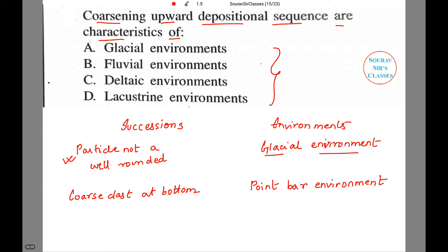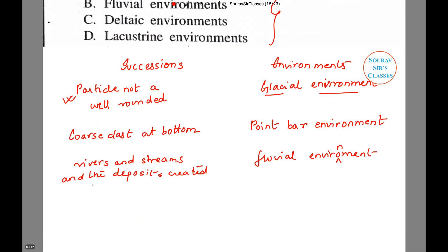Then here we have fluvial environment, and fluvial comes from the word fluid. So basically it is related to rivers and streams and the deposits created by them.